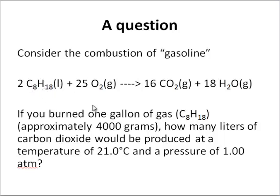Two moles of it react with 25 moles of oxygen to make 16 moles of carbon dioxide and 18 moles of water. Notice the labels for the phases, or our physical states I should say, liquid versus gas. If you burn one gallon of gas, which is about 4000 grams, how many liters of carbon dioxide would be produced at a temperature of 21 Celsius and a pressure of one atmosphere?